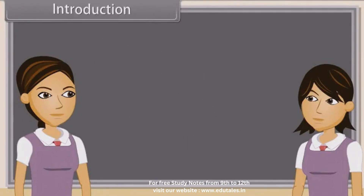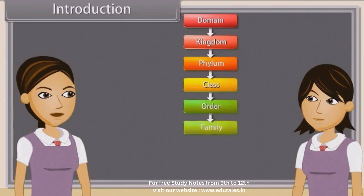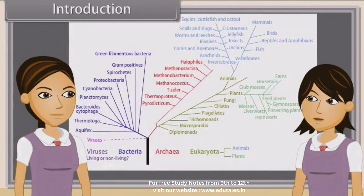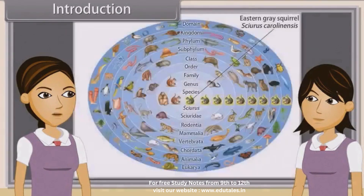Do you know what is biological classification? Biological classification, or scientific classification in biology, is a method by which biologists group and categorize organisms by biological type, such as genus or species. Modern biological classification has its root in the work of Carolus Linnaeus, who grouped species according to shared physical characteristics. These groupings have since been revised to improve consistency with the Darwinian principle of common descent.